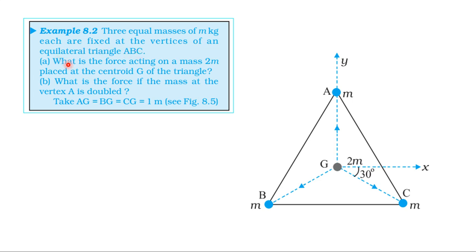First question: what is the force acting on a mass 2M placed at the centroid G of the triangle? Second question: what is the force if the mass at the vertex A is doubled? Take AG equal to BG equal to CG equal to 1 meter.